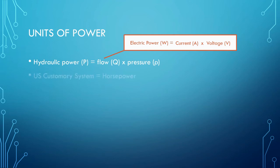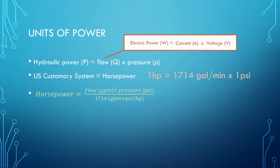In the US customary system, the most common unit for measuring fluid power is horsepower. 1 horsepower is equal to 1714 gallons per minute, a measurement of flow, times 1 pound per square inch, or psi, which is a measurement of pressure. According to this ratio, we can determine the amount of horsepower in a system by multiplying the flow in gallons per minute by the pressure in psi and dividing by the horsepower constant 1714.